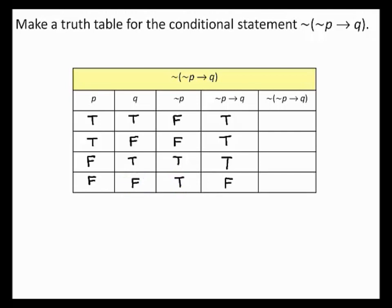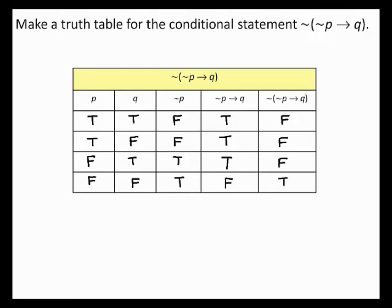Finally, determine the negation of (not P implies Q). Where (not P implies Q) is true, its negation is false, and where it is false, its negation is true. This gives you the completed truth table for the conditional statement: the negation of (not P implies Q).